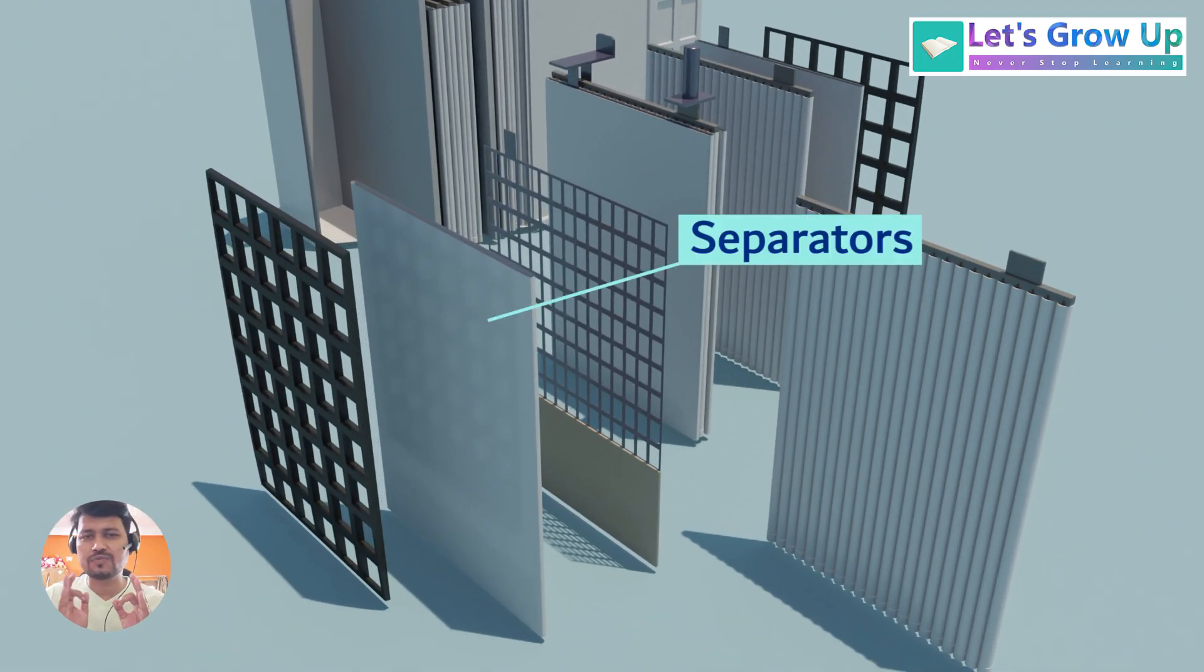These are separators. The thin, non-conductive, and porous sheets are placed between each positive and negative plate. Their job is to prevent the plates from touching and causing a short circuit while allowing the sulfuric acid electrolyte to flow freely between them.